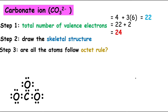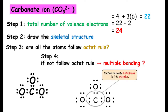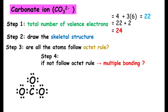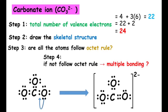Next step: check whether the central atom has an octet or not. If it does not have an octet, then move the electron pair from the outer or terminal atom to form a double bond or triple bond. So this is the Lewis structure of the carbonate ion.